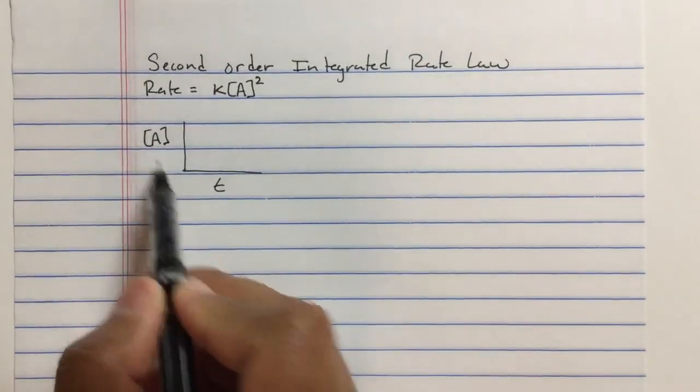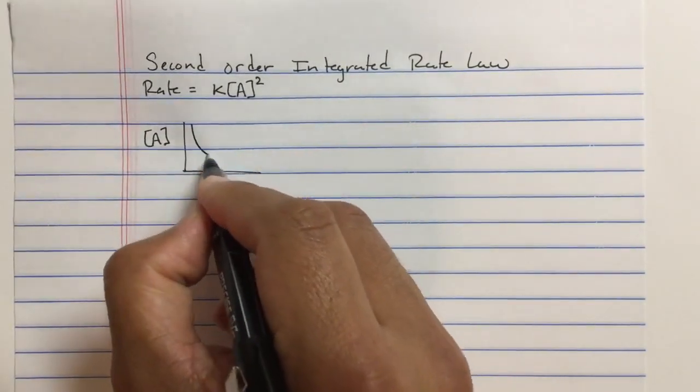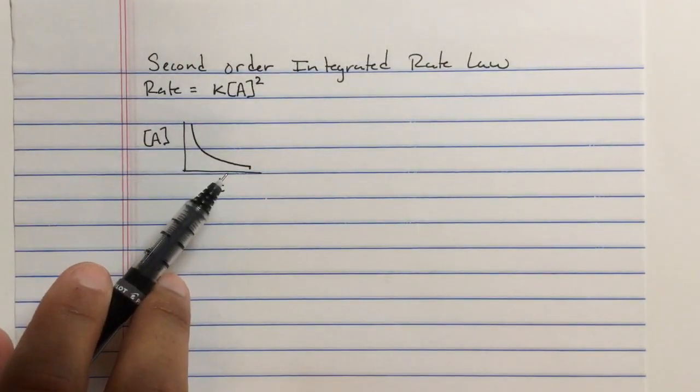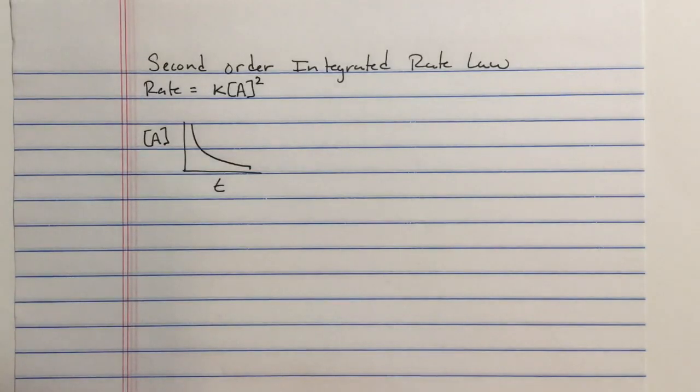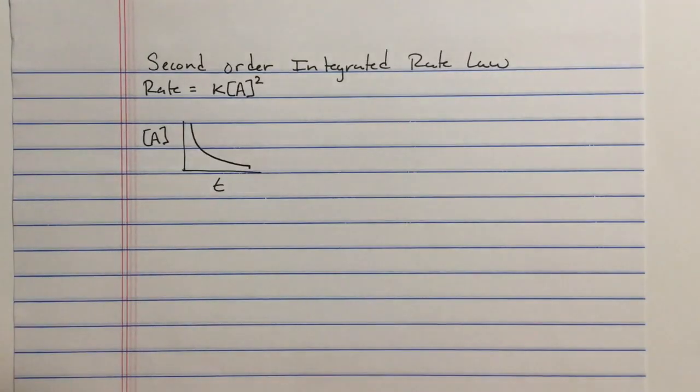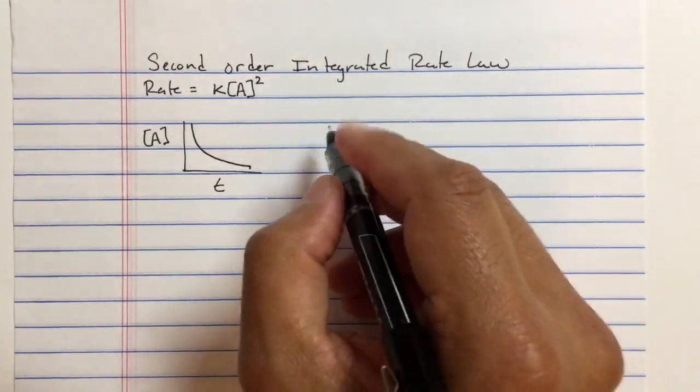When we plot the concentration of A versus time, usually you'll get this curve. Sometimes it's a straight line going down, and that means the reaction is zero order integrated rate law. When you get a curve, it's not zero order. It's going to be first or second order kinetics, or first or second order reactions.